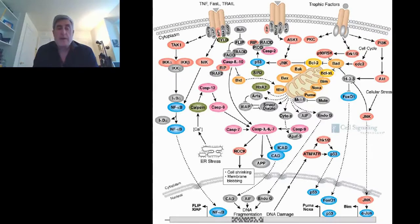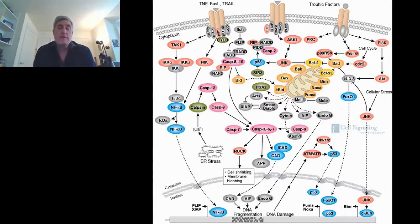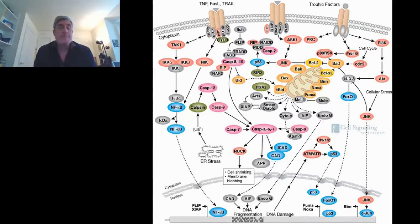Most of the drugs available today target the enzymatic actions of proteins in the cell. But there has been recent success in targeting protein-protein interactions, particularly with a molecule called venetoclax, which has turned out to be a blockbuster drug for chronic lymphocytic leukemia and is now being introduced into other leukemia-type diseases. This pathway shows many different proteins—some enzymes, but many regulated by protein-protein interactions—meaning there are a plethora of pharmaceutically relevant targets for which we have very little in the way of drugs, because pharma generally considers these very hard targets. However, they are starting to fall.